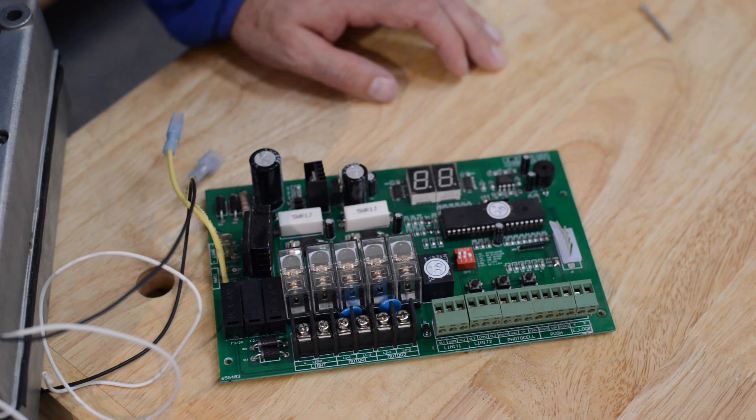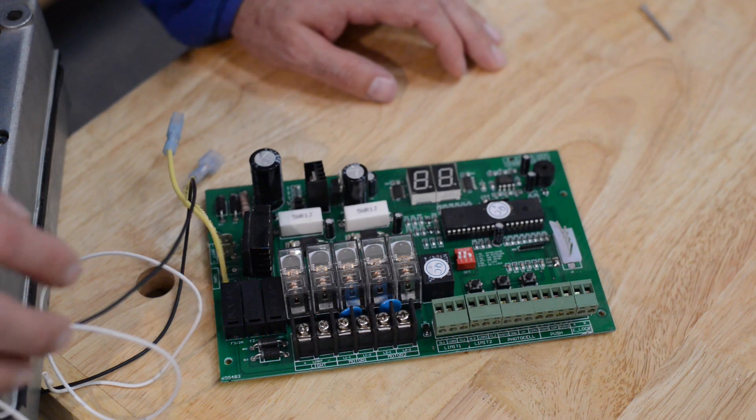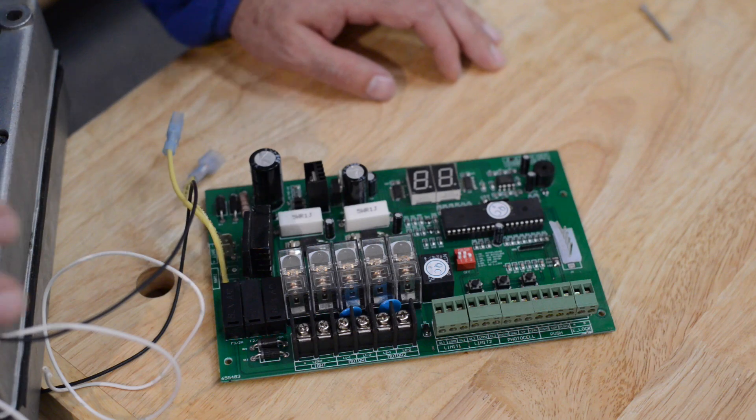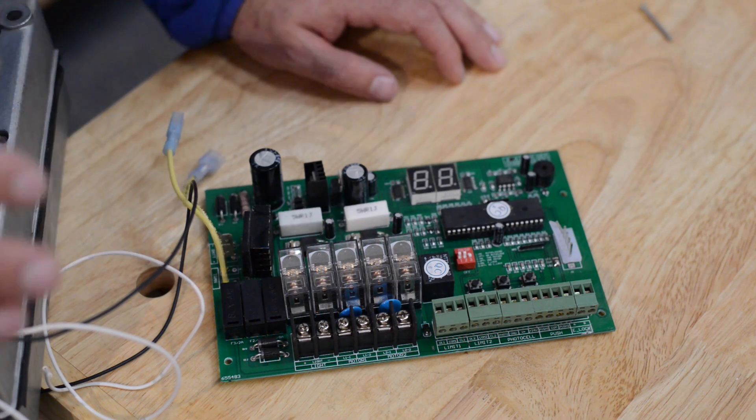And that you have the open limit switch identified and the closed limit switch identified and the normally closed from those particular limit switches going to the correct terminals here. Then you can make sure that the operator is running in the correct direction.